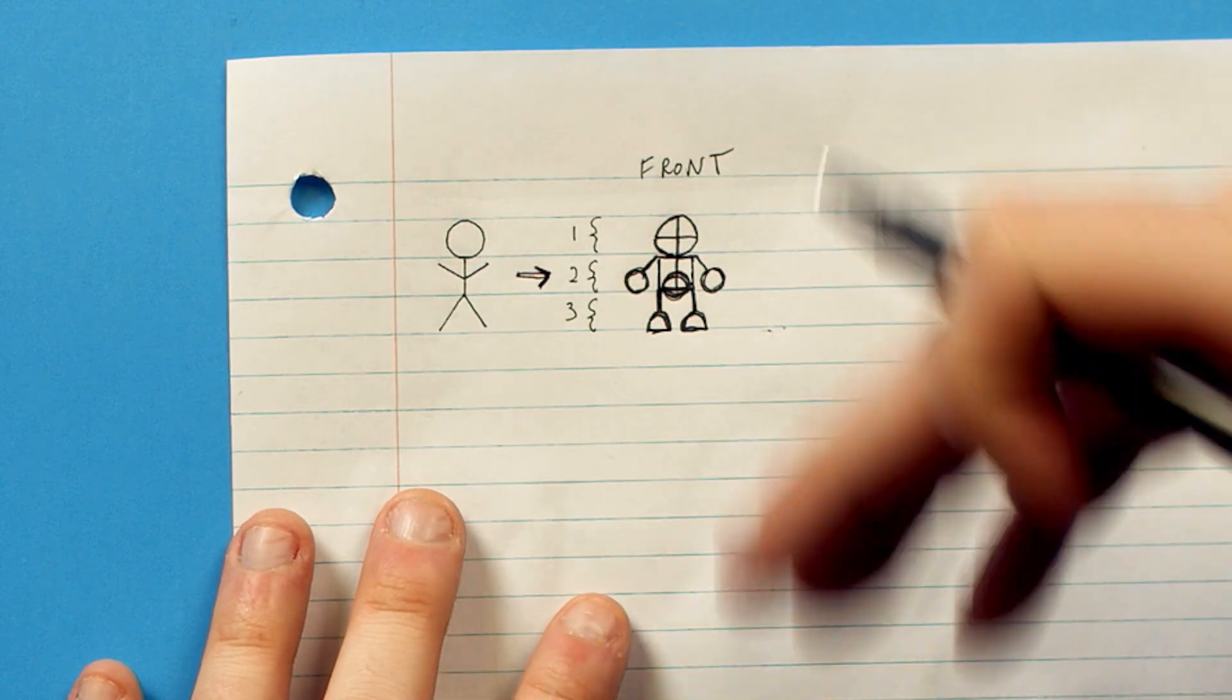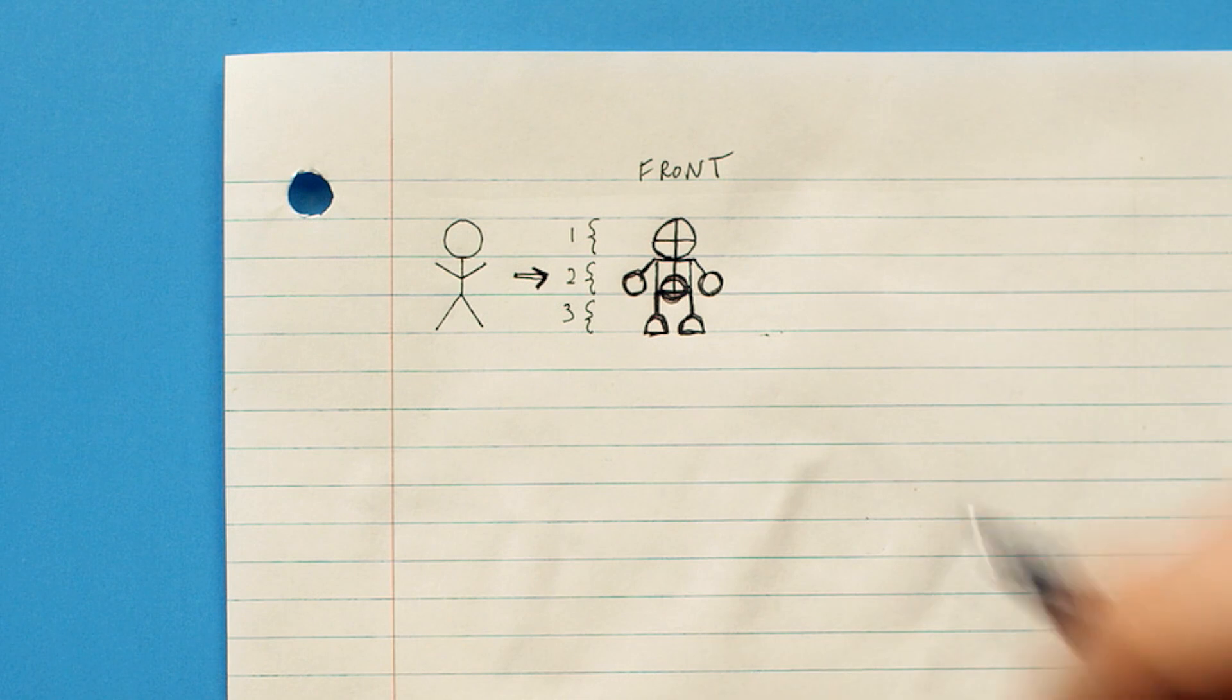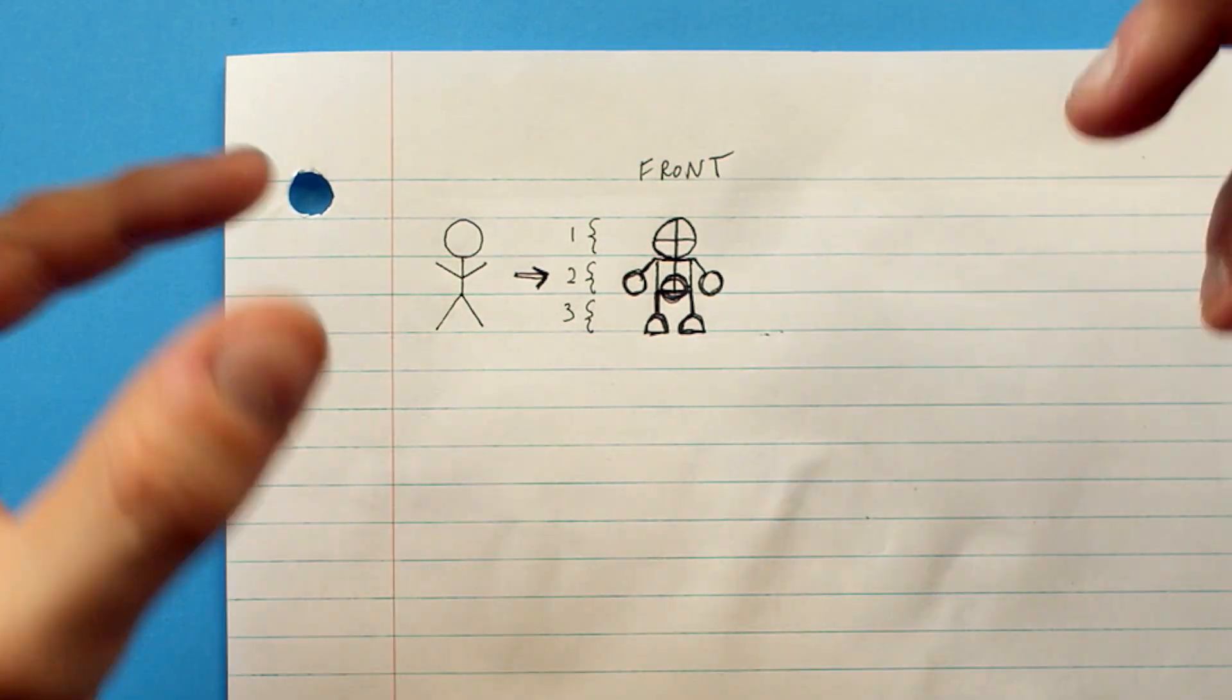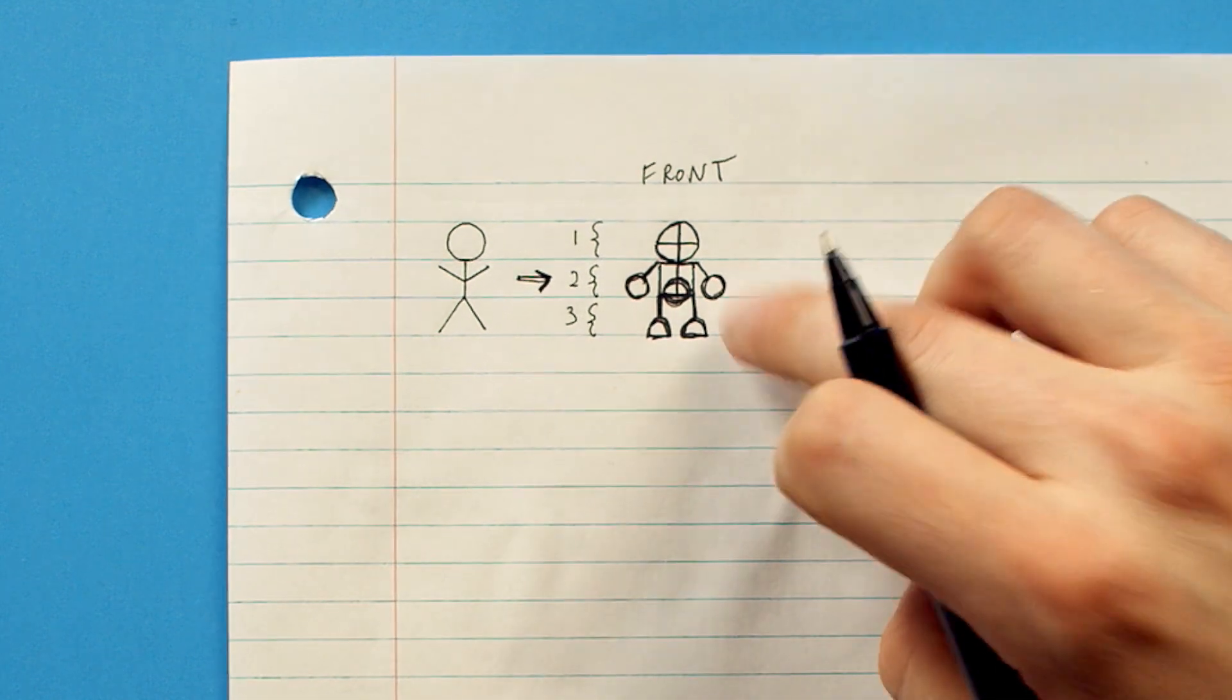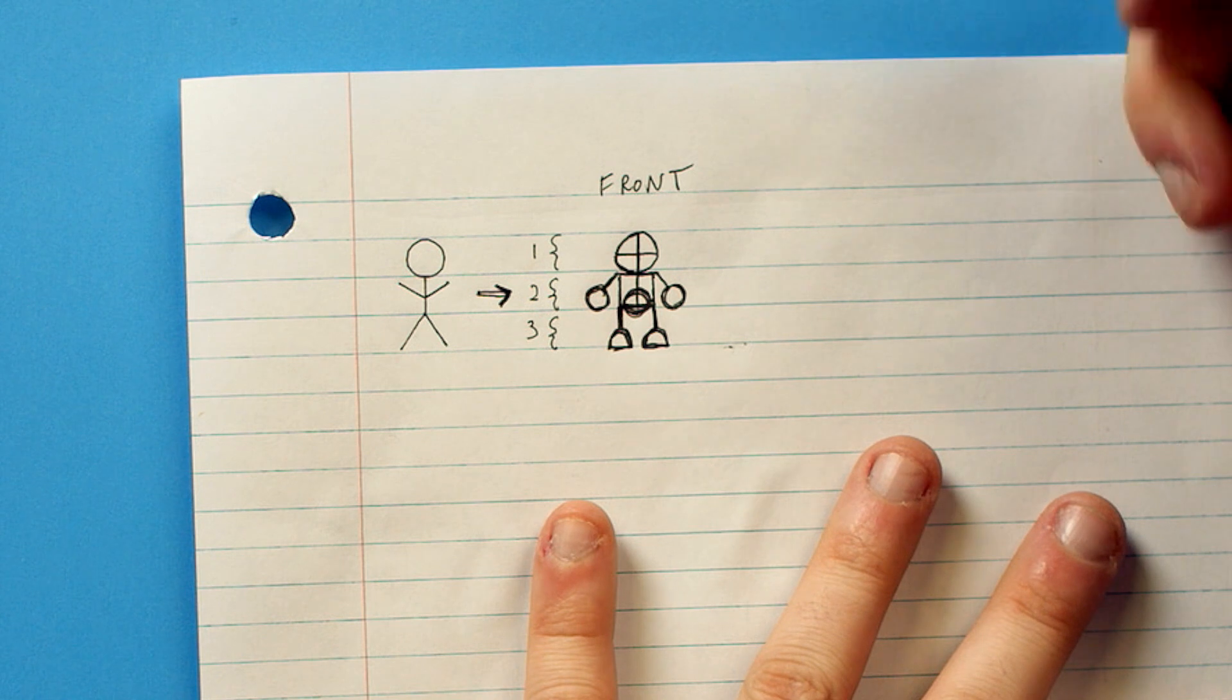Now, you can see that's an upgraded version of this Stickman, just very easily. Just a couple simple shapes together in proportions can give you something that you can see maybe animating or something like that. So, that's the front view of your character.